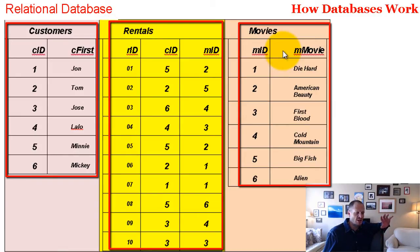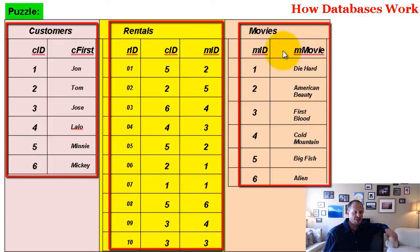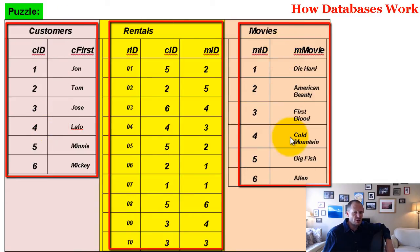The question I have for you to ponder, to help you start down the road of understanding relational databases, is: who was the last person to rent the movie First Blood? Look at this database diagram with these three tables and see if you can figure it out. The first rental transaction is at the top, and the later rental transactions are further down. Pause the video and see if you can figure out who is the last person to rent First Blood.